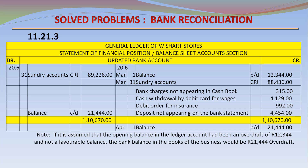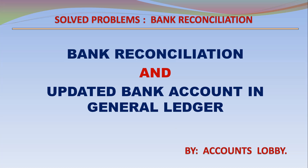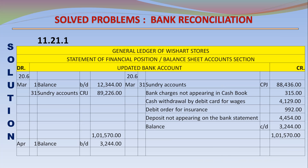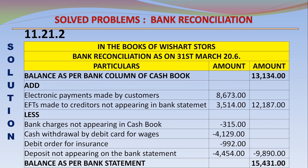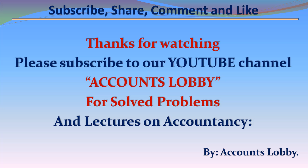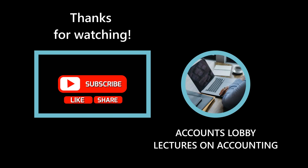On the credit side: April 1, balance brought down 21,444 overdraft. Note: if it is assumed that the opening balance in the ledger account had been an overdraft of 12,344 and not a favorable balance, the balance in the books of the business would be 21,444 overdraft. Recap: 10,645 overdraft.